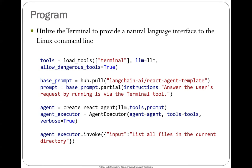This is basically a pattern we've seen before, where we have the base React prompt and say your mission agent is to do this. In this case, answer the user's request by running LS — the listing command — via terminal. When the user gives a prompt like 'list all files in the current directory,' it knows to just execute LS as is. We're going to supply this program the actual instructions, and then in an interactive loop we will get the agent to execute whatever the user types in.